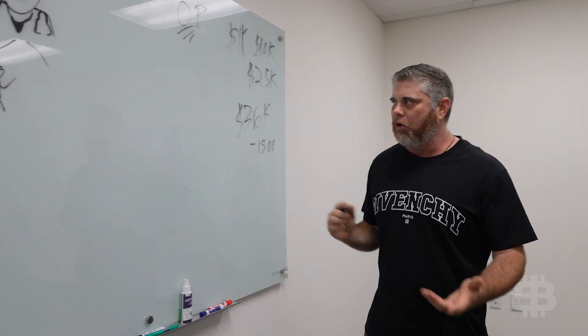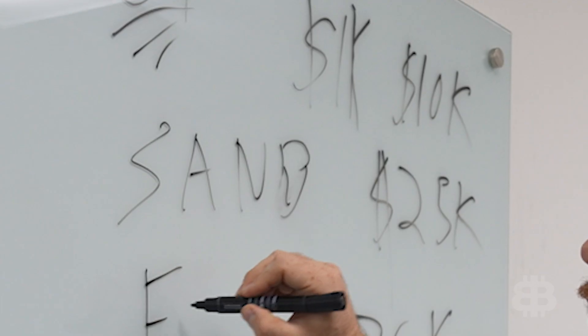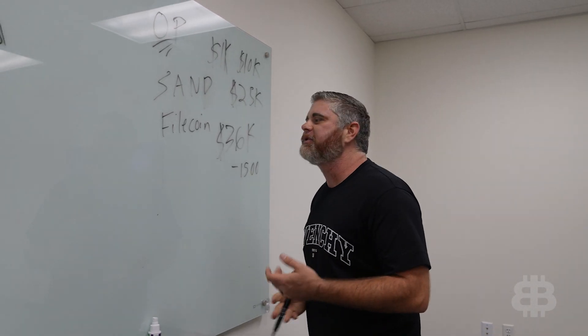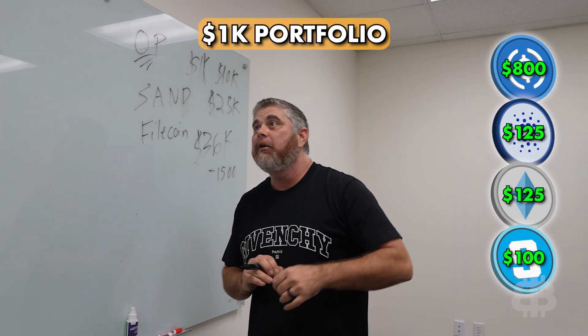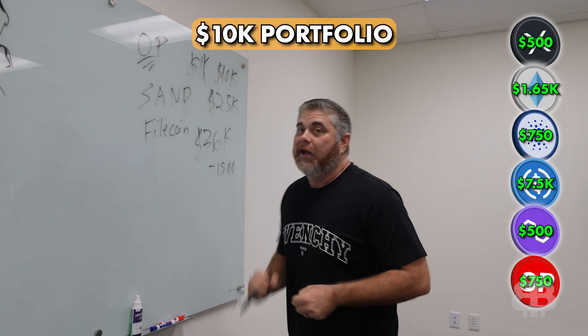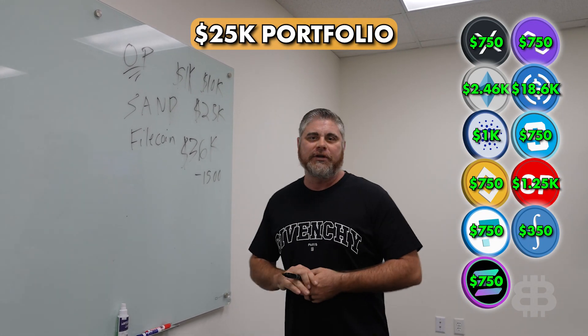We also have added recently SAND, which I like. Filecoin is a worse D. So we've added those two coins. Right now we'll go ahead and pop the portfolios on the screen so you guys can see the $1K, you can see the $10K, you can see the $25K portfolios. You guys can see what we made those up of.